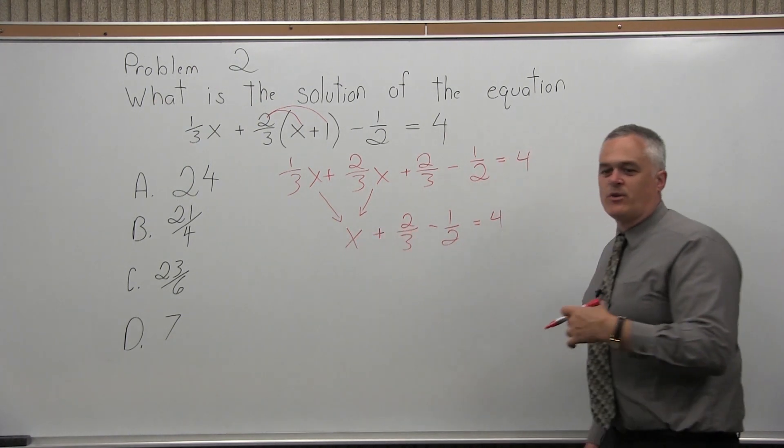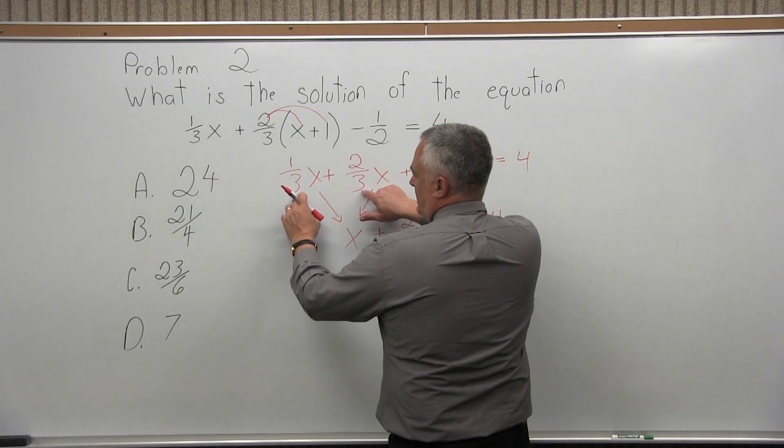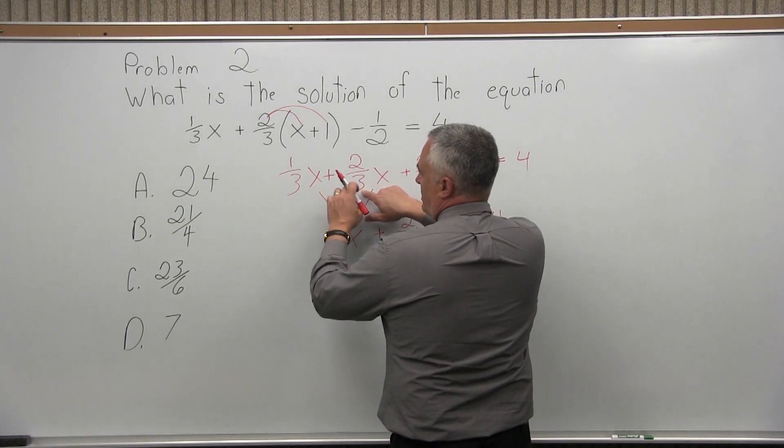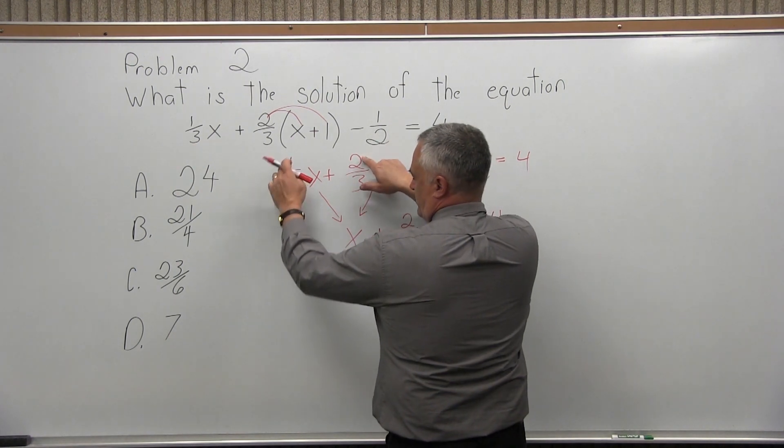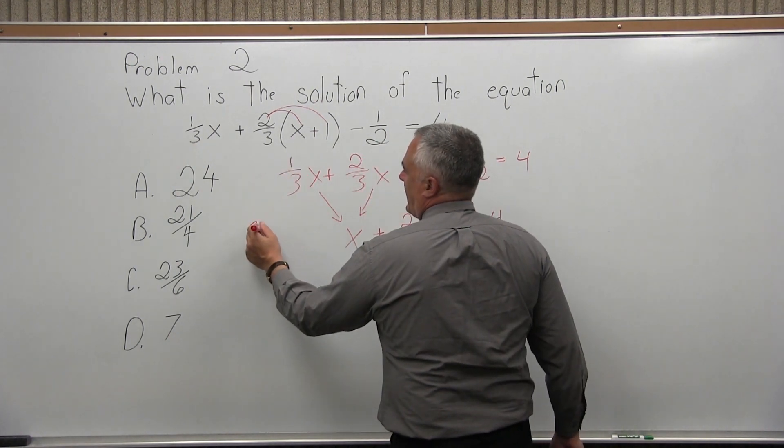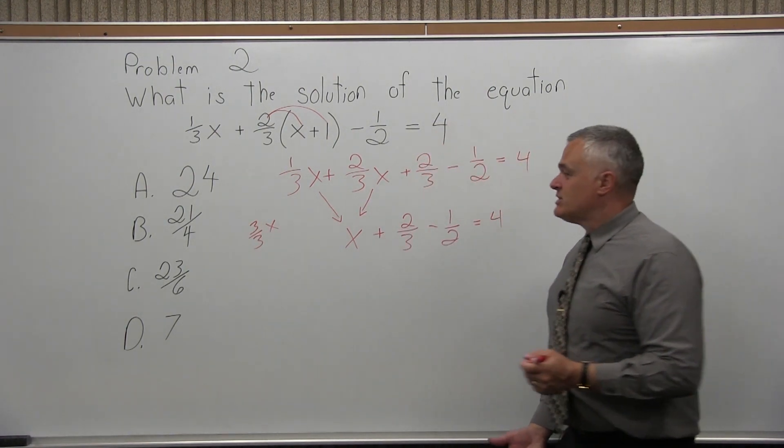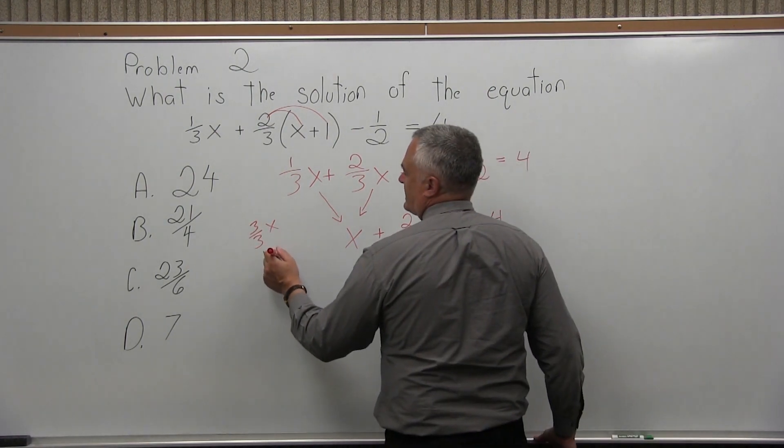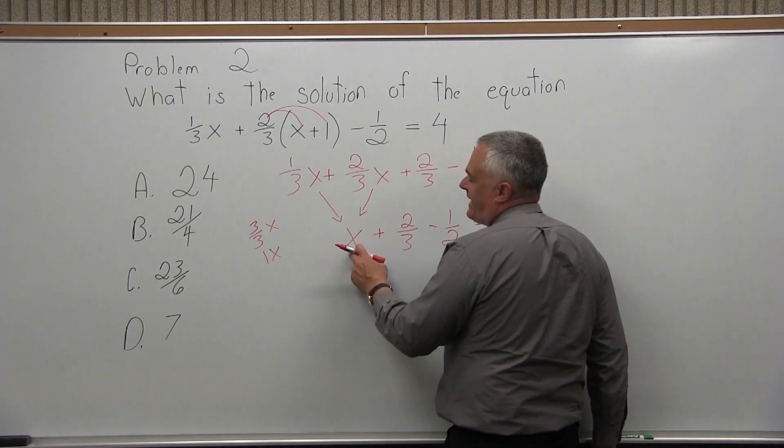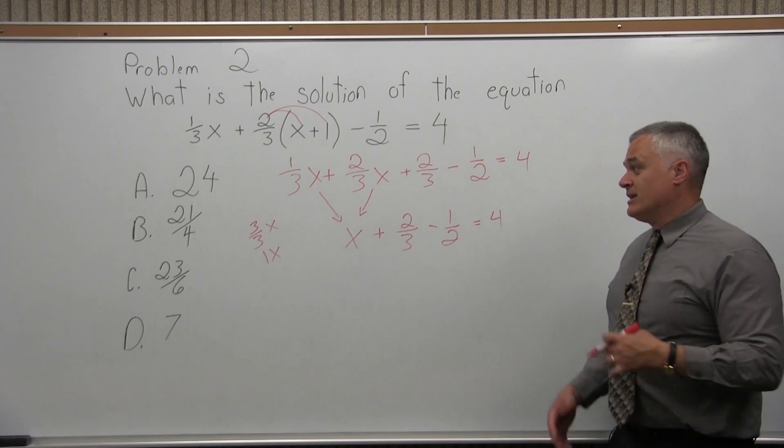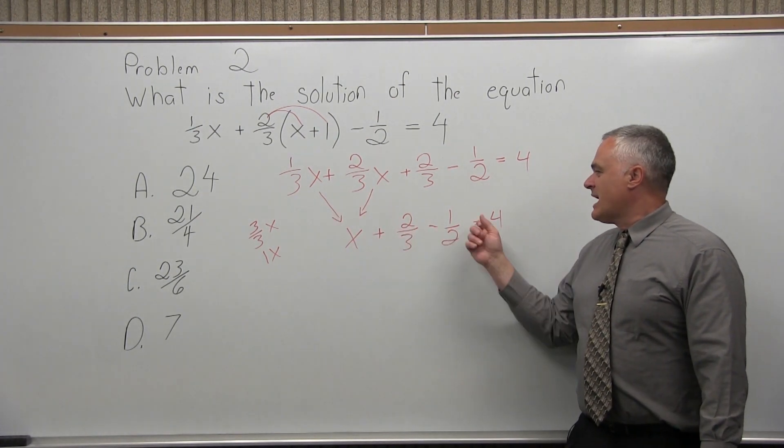Let's talk about that for a minute. 1 third x plus 2 thirds x, I just got x. Now, you might see that right away and be fine with it, but if you don't, what I'm doing is adding the numbers in front of the x. 1 third plus 2 thirds. I have a common denominator of 3. Combine the numerators, 1 plus 2. So, what I had was 3 thirds x. 3 thirds reduces to 1. So, 3 thirds x is 1 x, and you don't usually write the 1 in front. That's how I just came up with the x.